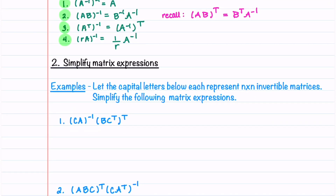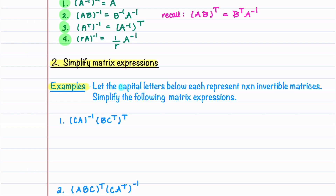Let's now use these properties to simplify some matrix expressions. In the examples below, the capital letters represent n by n invertible matrices, and we're asked to simplify the following matrix expressions. In our first example, we'll work from left to right and simplify the first expression and then the second expression. Our first expression is equal to A inverse, C inverse, because we have to switch the order.